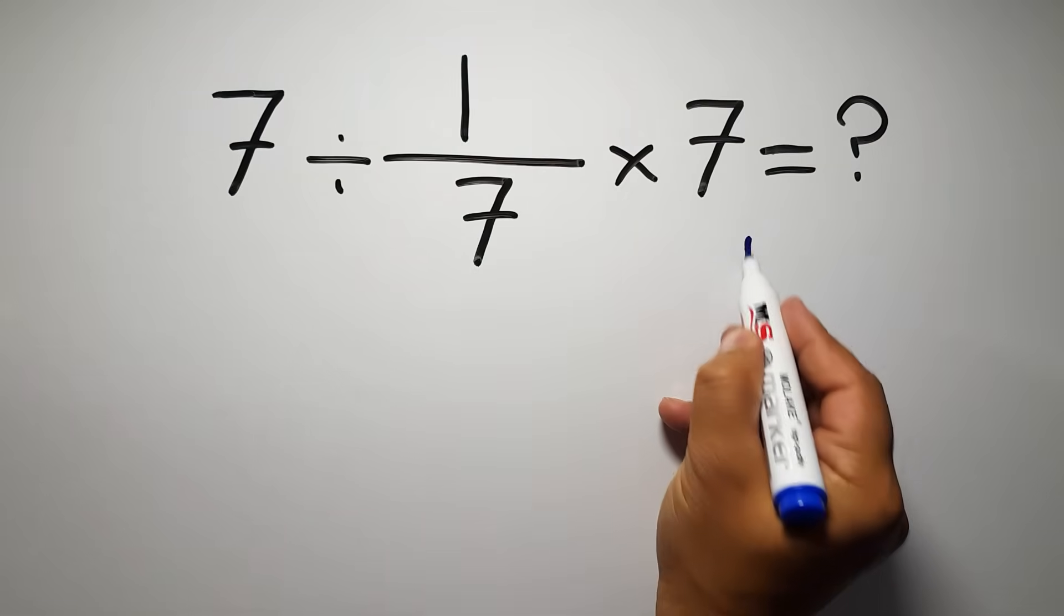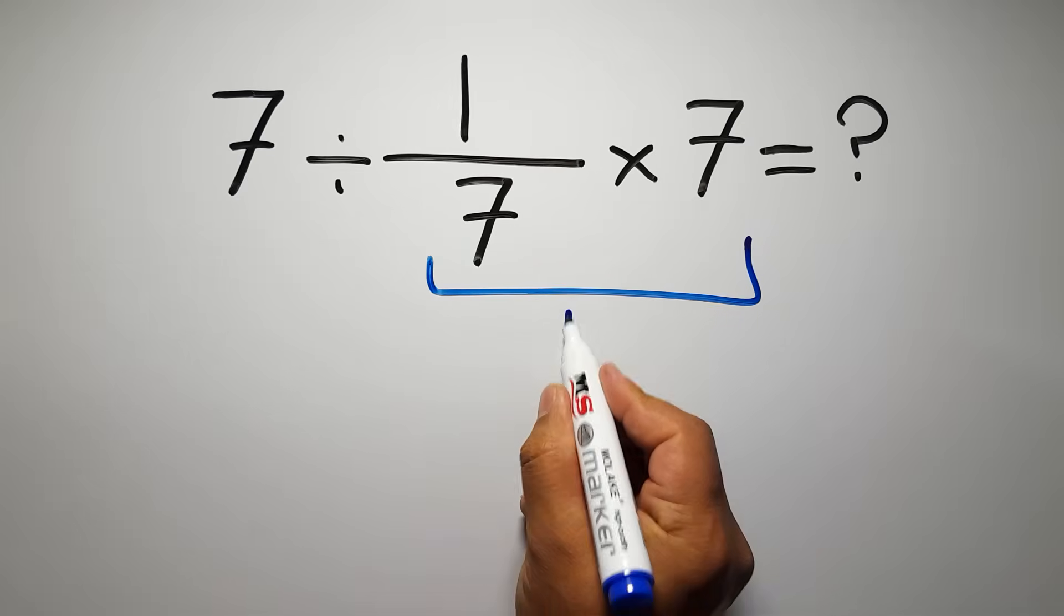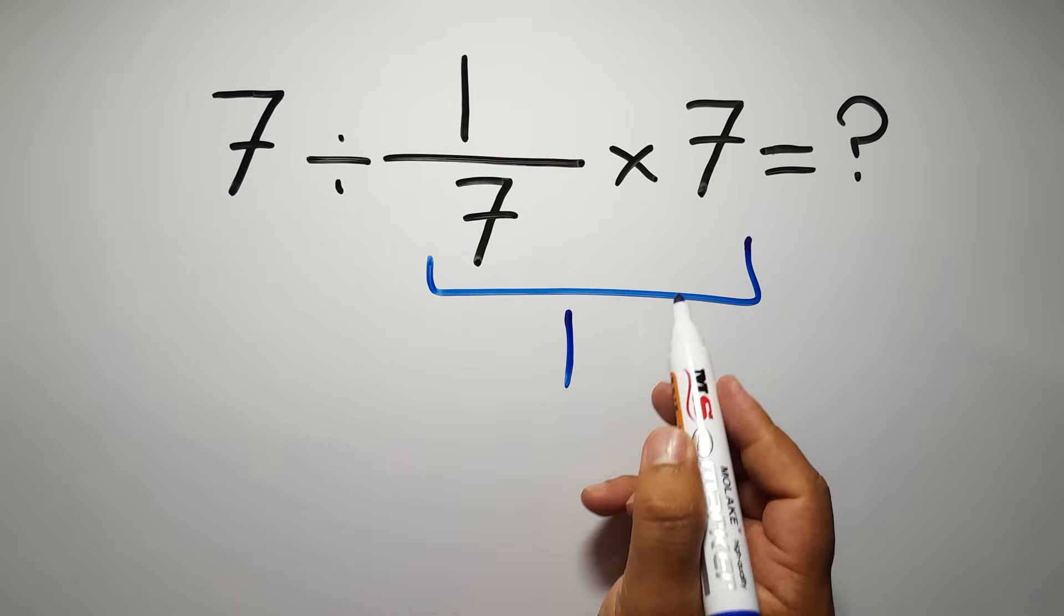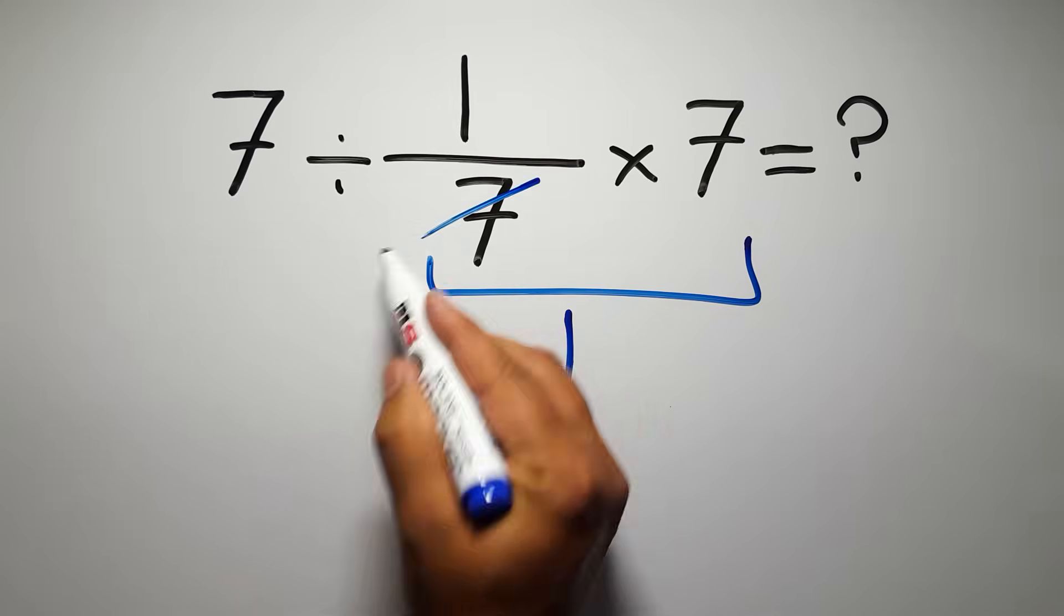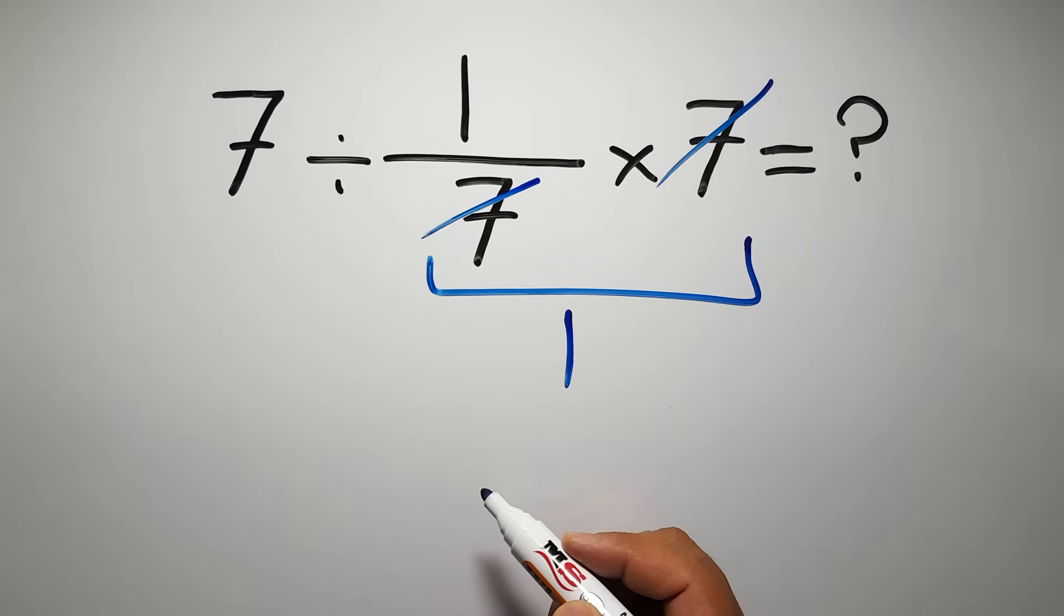1 over 7 times 7 gives us just 1, because we can easily cancel this 7 and this 7.